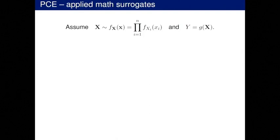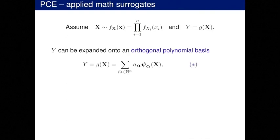Let's think about polynomial chaos. I have a vector of random variables, capital X, coming from some distribution — independently in each dimension, a product of one-dimensional PDFs. My computer model output is then a random function of these inputs since they're random. This random variable Y can be expanded onto an orthogonal polynomial basis. The notation is dense, but basically the psi's are orthogonal polynomials. I'm summing infinities of them — in each dimension and with cross terms — and each polynomial term gets a weight A with it.